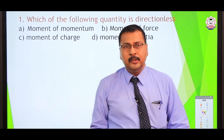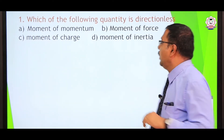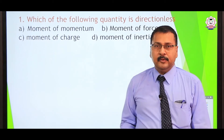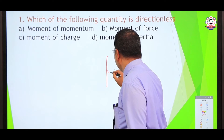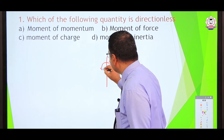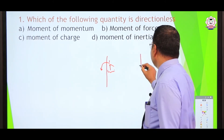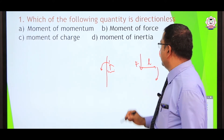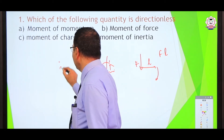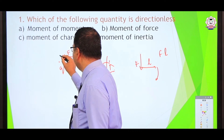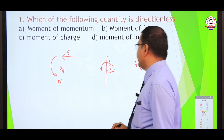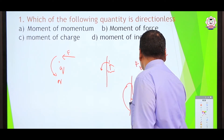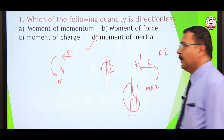Let us look at some practice problems. Which of the following quantities is directionless? Moment of momentum has direction; moment of force (f times l) has direction; moment of charge has direction as the force tends to move the particle in a clockwise direction. However, moment of inertia of a body does not have a direction — it is simply m times r squared. So the answer is moment of inertia.